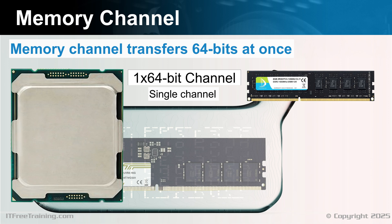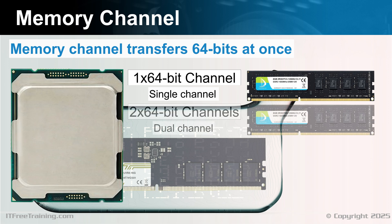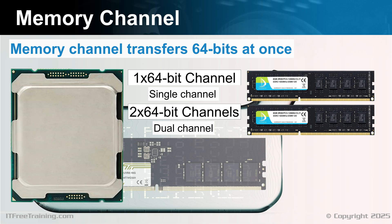To get better performance, in the 2000s, a second channel was added. This channel allowed data to be transferred over a second 64-bit bus. Each of these buses is called a channel. When two channels are being used, this is called dual channel. Although in this example I have used a single memory module, it is possible for two memory modules to be installed on the same channel. Later in the video, I will look at how this is implemented.